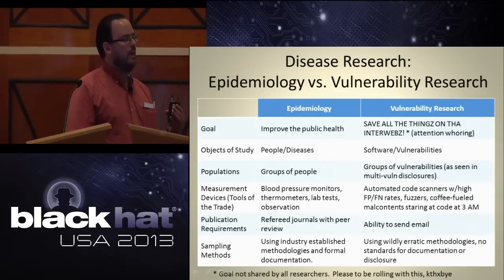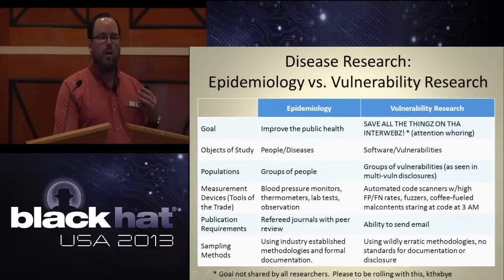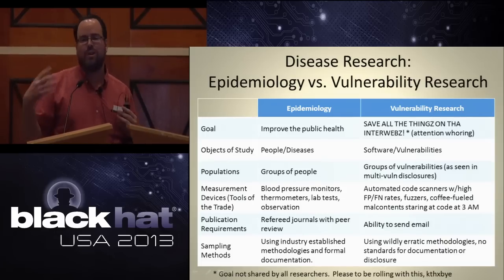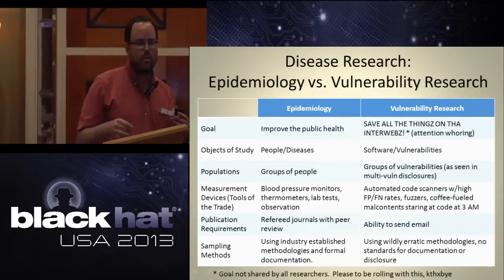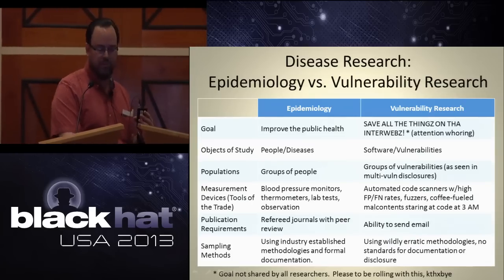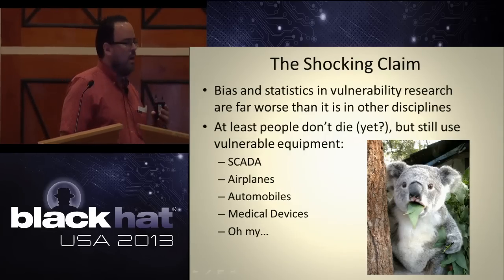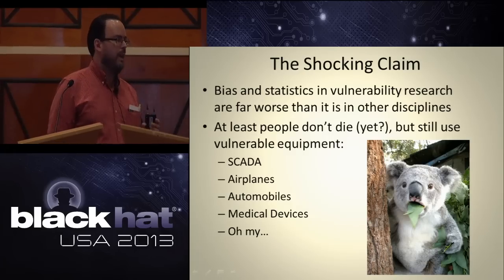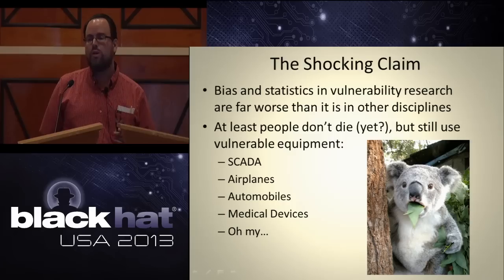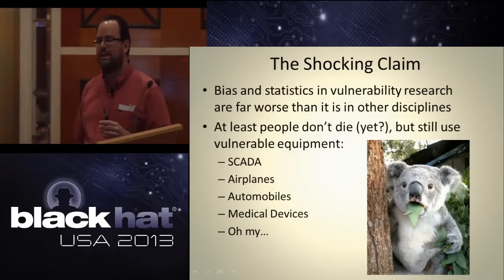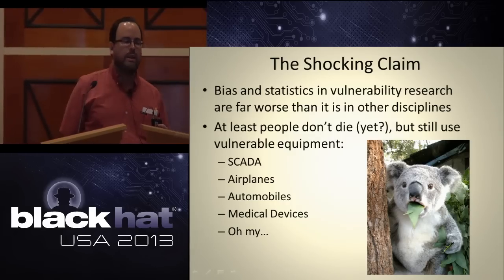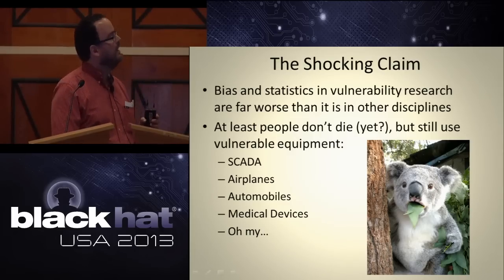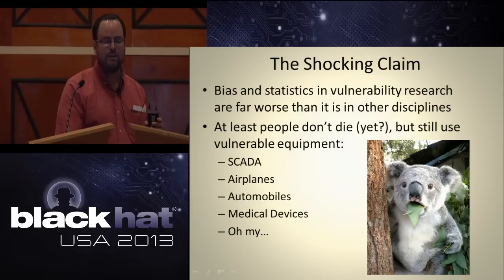We have a lot of sampling issues, but we don't use measuring devices that are as accurate or reliable as simple things like thermometers or blood pressure monitors. So our claim is that for vulnerability research, we are far worse off right now than other disciplines are. And fortunately nobody is going to die as a result of this. Oh, except we have this Internet of Things — cars, planes, trains, automobiles. So yeah, this is disconcerting.